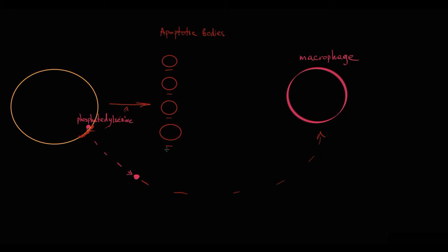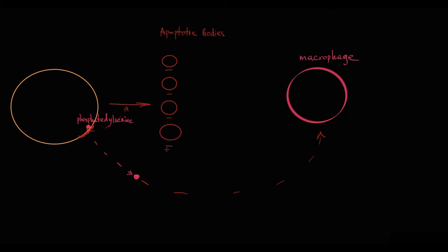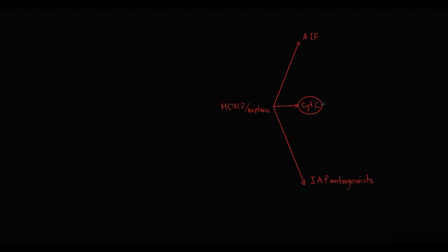In response to this, macrophages approach the site where apoptosis occurred and phagocytose the apoptotic bodies. So cytochrome C initiates a caspase cascade that results in cell death by apoptosis.